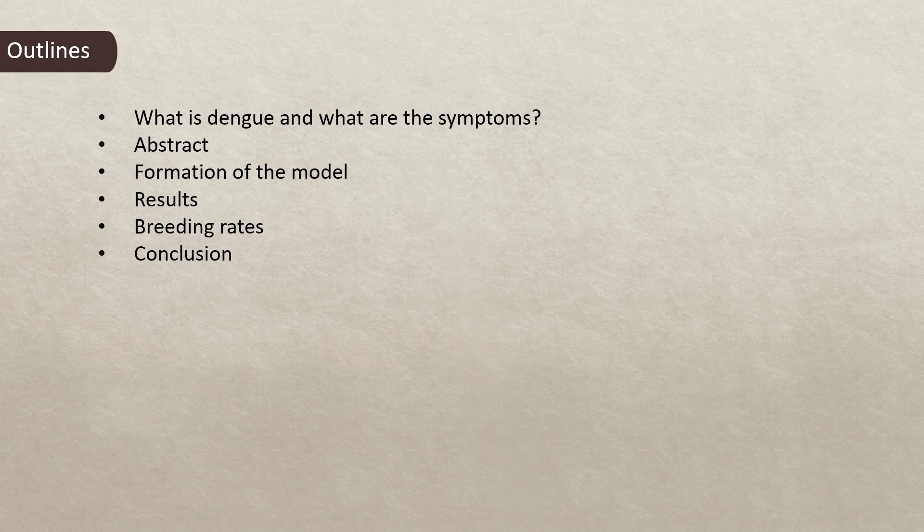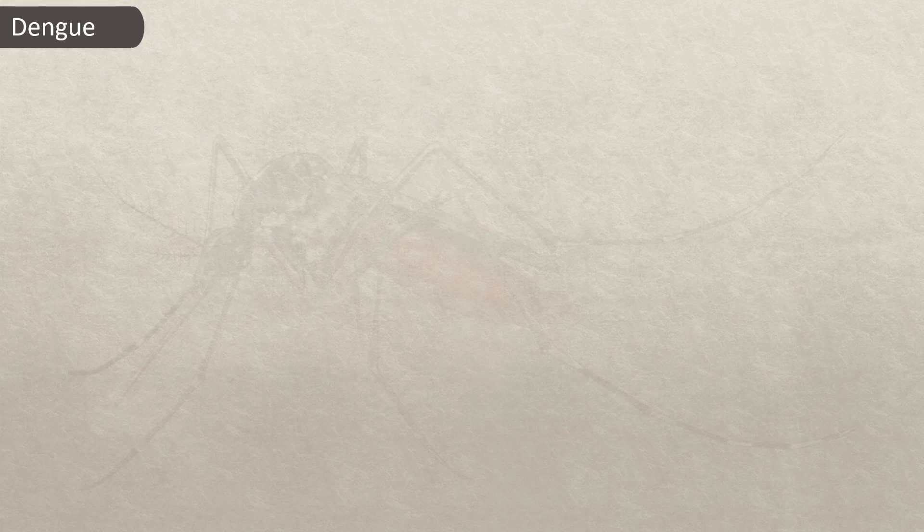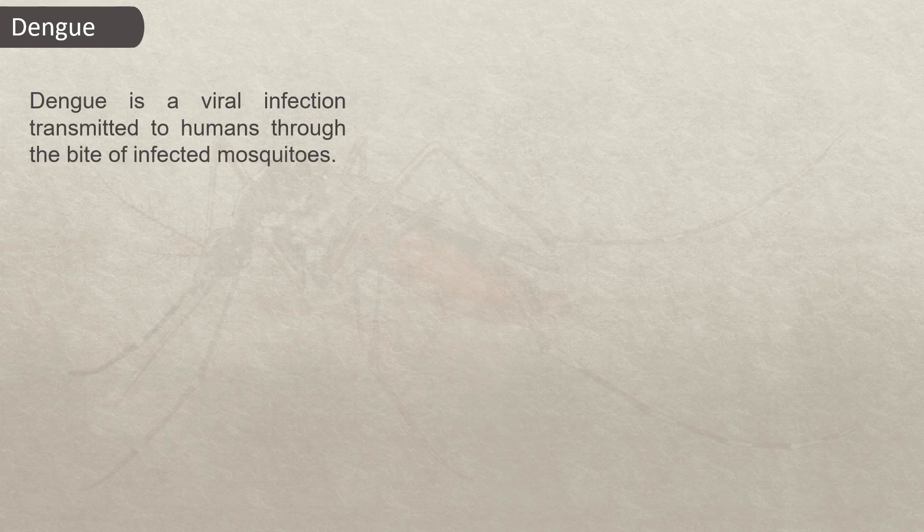the formation of the model, results, breeding rates, the reproductive number, and conclusion. So, what is dengue? Dengue is a viral infection transmitted to humans through the bite of infected mosquitoes.